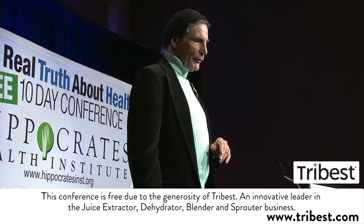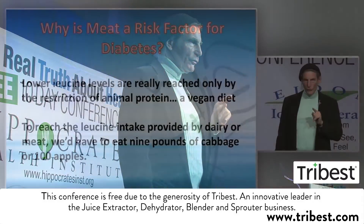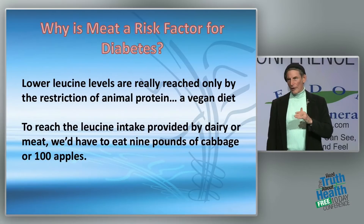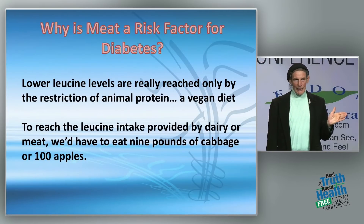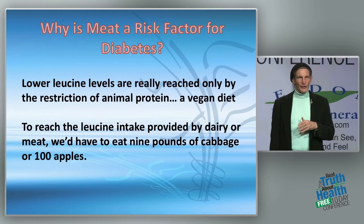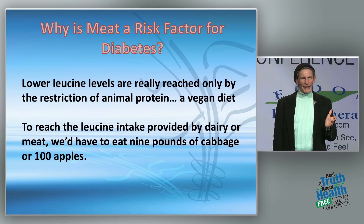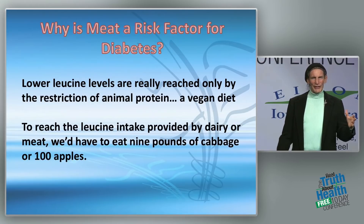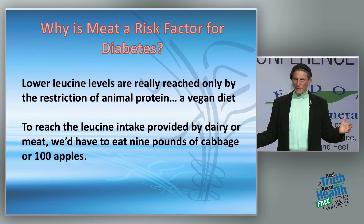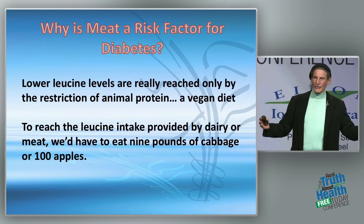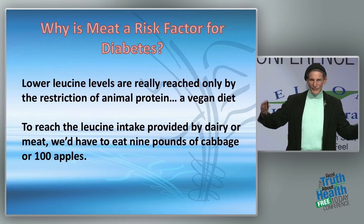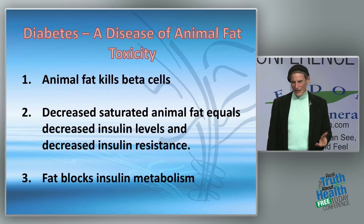Leucine levels are much, much lower in vegan diets. To illustrate: you'd need to eat nine pounds of cabbage or 100 apples per day to equal the amount of leucine you get from eating meat daily. So a plant-based diet is nowhere near the leucine load of a meat-based diet — and that's an important distinction for diabetes and longevity.